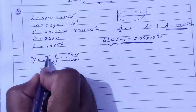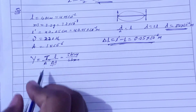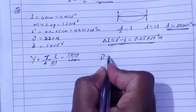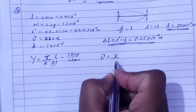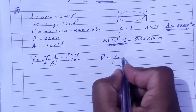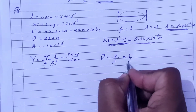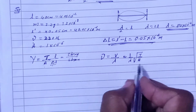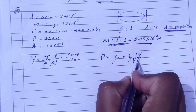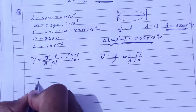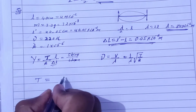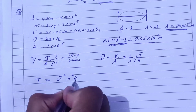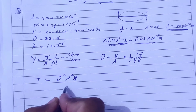Now we need tension. Frequency equals speed upon wavelength, and speed equals the square root of tension upon mass per unit length (mu). Rearranging, tension is equal to frequency squared times lambda squared times mu, i.e., T = ν² × λ² × μ.